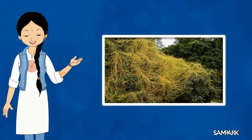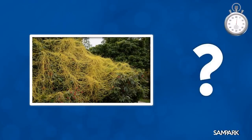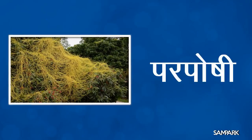ये है एक अमर बेल। ये किसी अन्य पादप पर उग कर उससे अपना भोजन प्राप्त करती है। जिस पादप पर ये बेल उगती है उसे क्या कहते हैं? उसे परपोषी कहते हैं। पर यानी दूसरे का, और पोषी यानी पोषण करने वाला, तो परपोषी मतलब किसी दूसरे जीव का पोषण करने वाला।